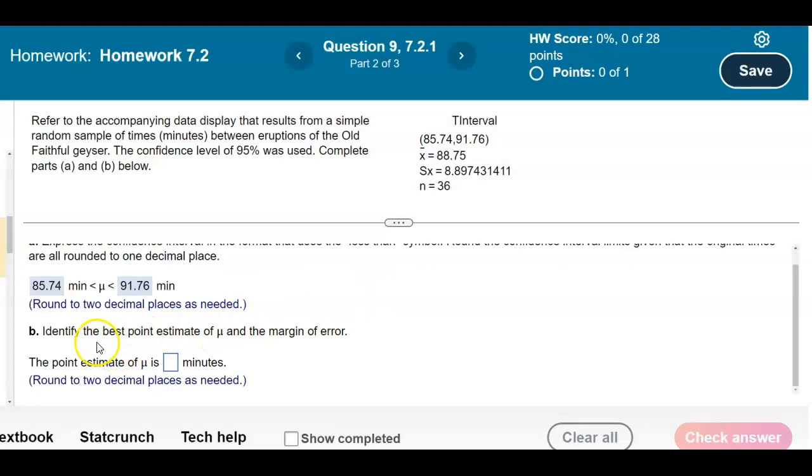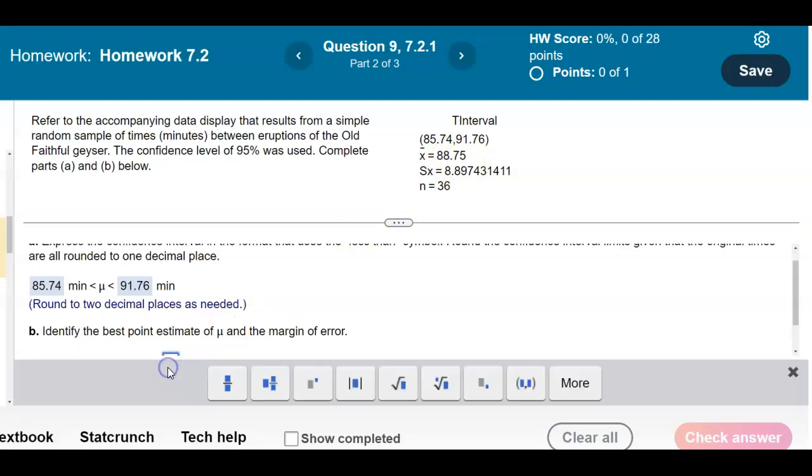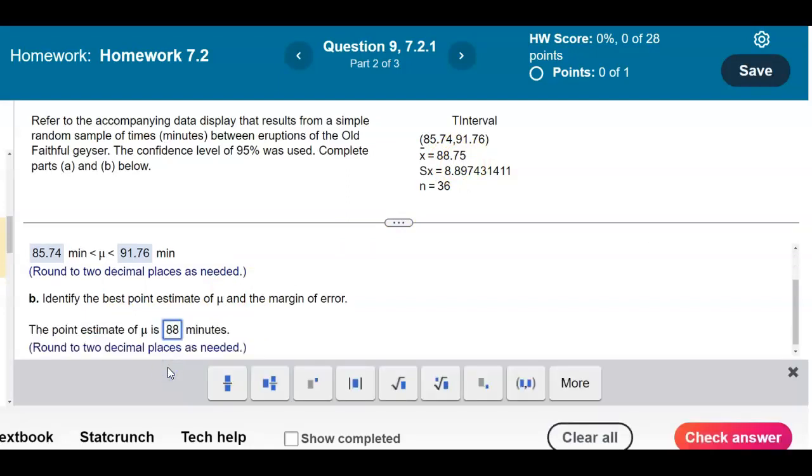Now it says to identify the best point estimate of the mean and the margin of error. The best point estimate of the population mean is the sample mean, and you can see here the sample mean is x̄ which is equal to 88.75. So the point estimate of the population mean is the sample mean which is 88.75 minutes.